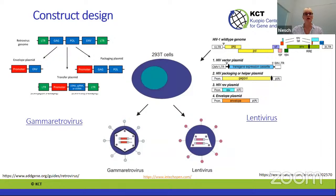For safe vector production, it has become very important to split the genome parts into separate plasmid constructs, minimizing the possibility of creating replication-competent vectors. Gamma retroviruses are typically split across three plasmids: one providing GAG and POL, one providing the envelope, and one construct with the packaging signal containing the transgene — the only genetic element packaged inside the forming vector. Lentiviruses use four plasmids, with the fourth being the REV regulatory plasmid, which is essential for lentiviral splicing.